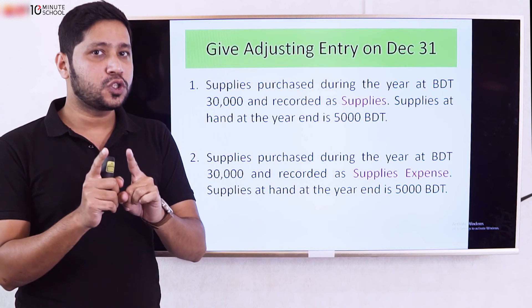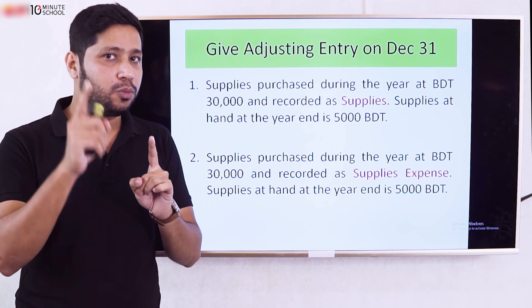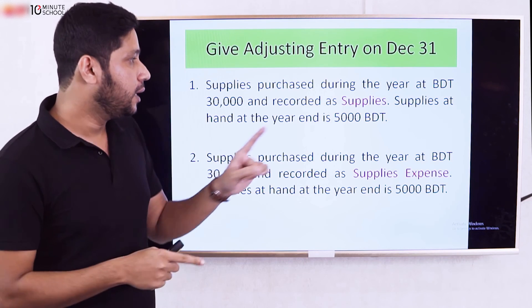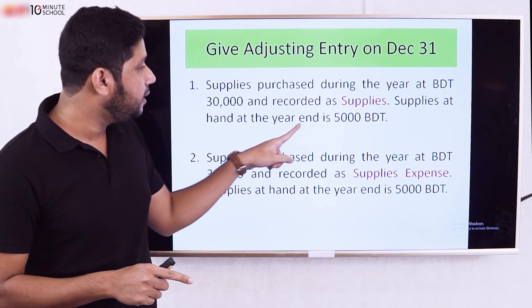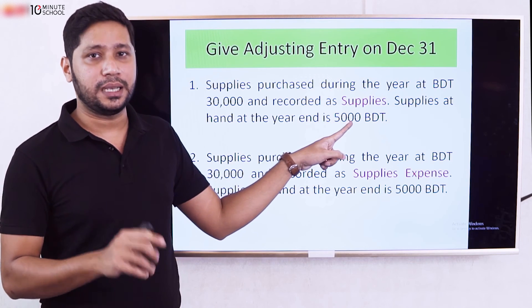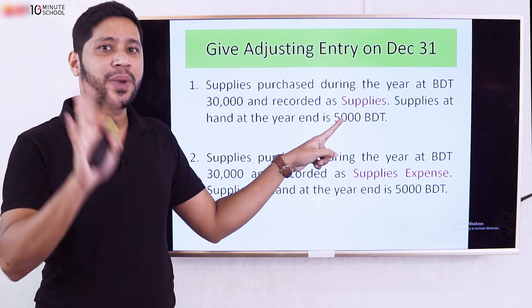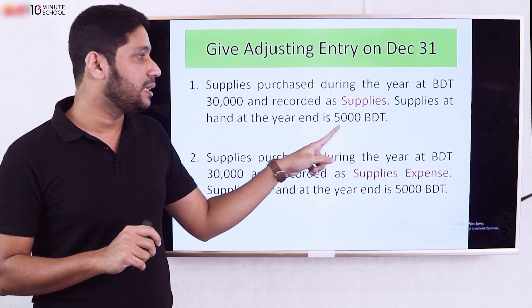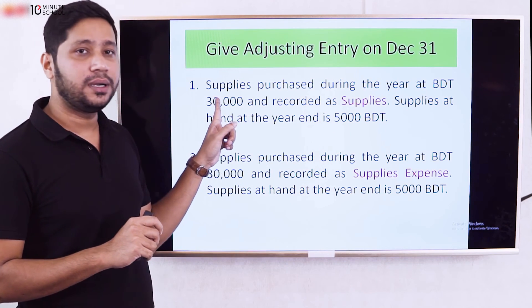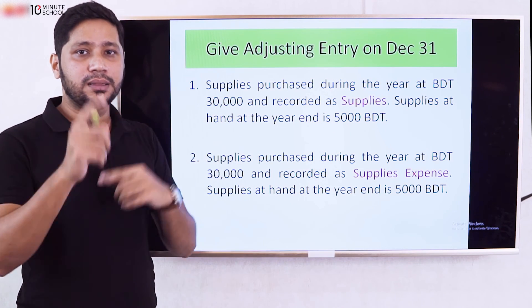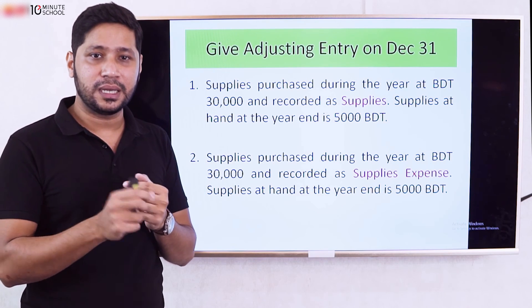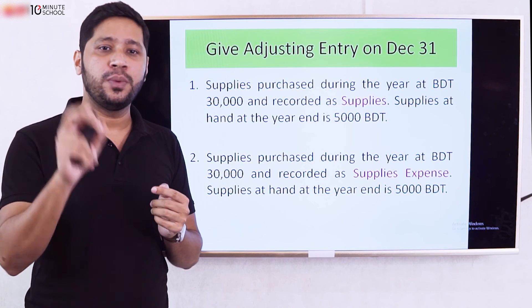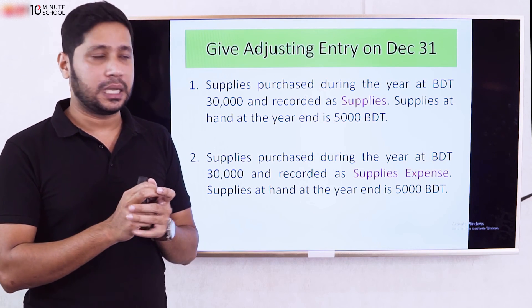The adjusting entry will be: Supplies Expense debit, Supplies credit. We need to determine the used amount. Supplies at hand at year end is $5,000. Since $30,000 was purchased and $5,000 remains, the used amount is $25,000.